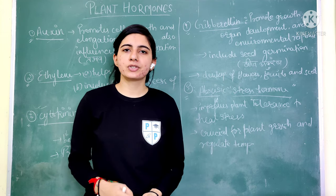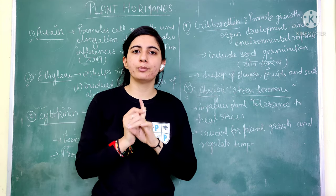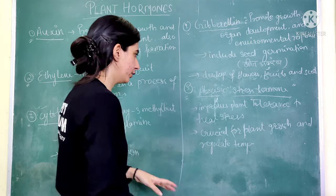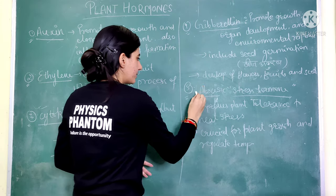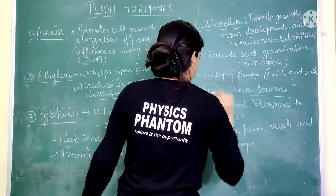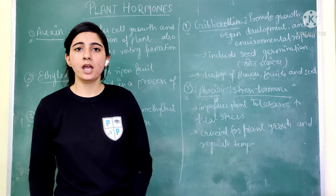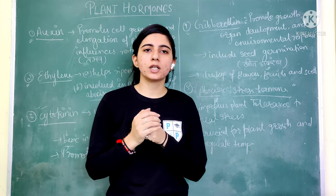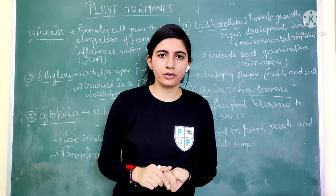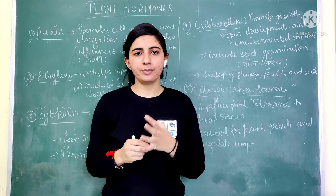Now let's talk about the stress hormone — Abscisic acid. It is very important from an exam point of view. Why do we call it the stress hormone? Because the heat tolerance of the plant is increased by this hormone.